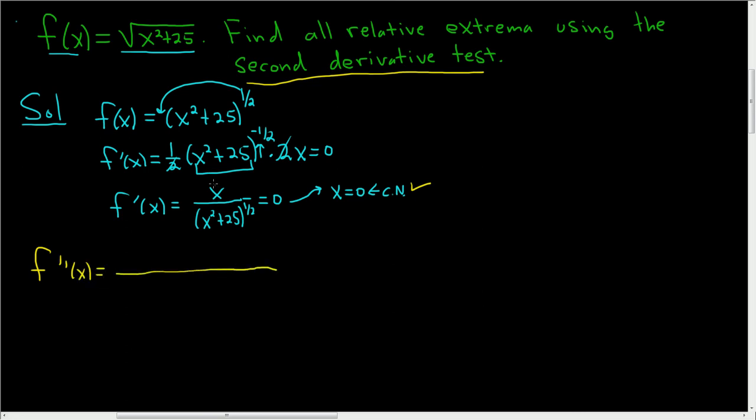It's the derivative of the top piece, so 1, times the bottom piece, x squared plus 25 to the one-half, minus the top piece times the derivative of the bottom piece. Here we have to use the chain rule, so we'll bring the one-half down and leave the inside untouched, x squared plus 25, subtract 1, we get negative one-half, and then chain rule says we multiply by the derivative of x squared plus 25, so 2x.